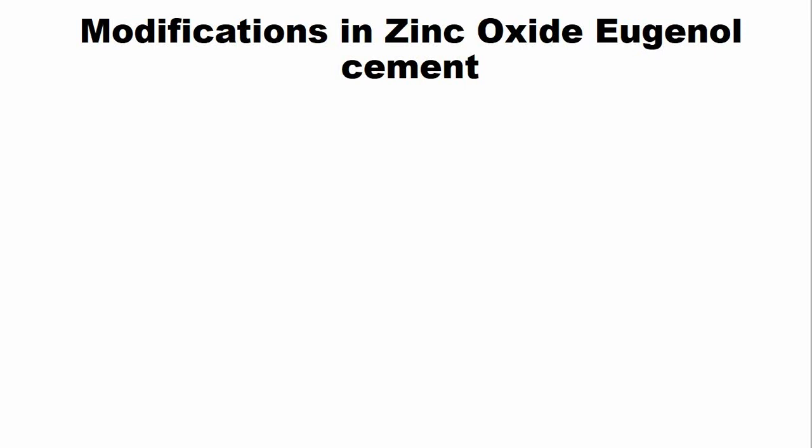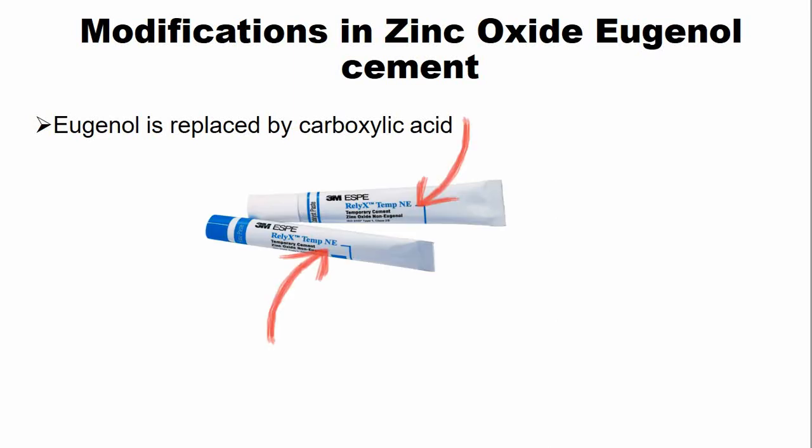There are several modifications done to zinc oxide eugenol cement to improve its strength and decrease adverse reactions. For example, one modification is that the eugenol in the liquid component is replaced by carboxylic acid; we call these cements non-eugenol zinc oxide cements.